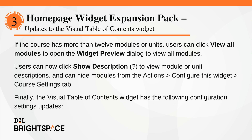If the course has more than 12 modules or units, users can click View All Modules to open the Widget Preview dialog to view all modules. Users can also now click Show Description to view module or unit descriptions and can hide modules from the Actions - Configure This Widget Course Settings tab.